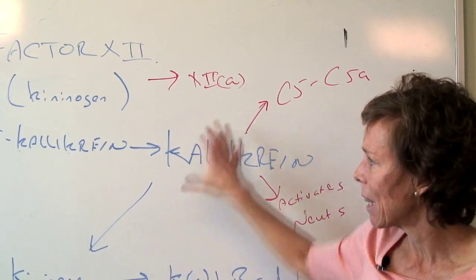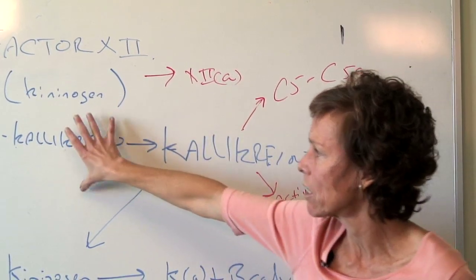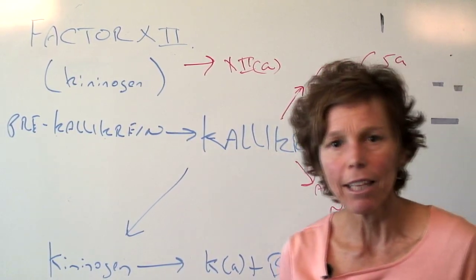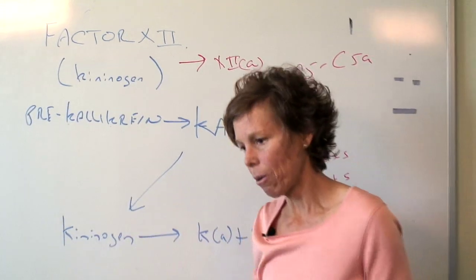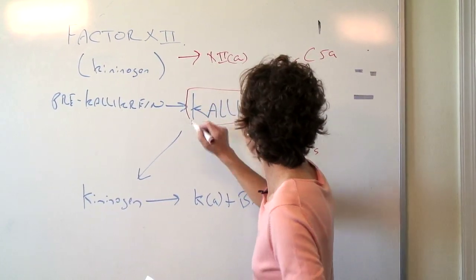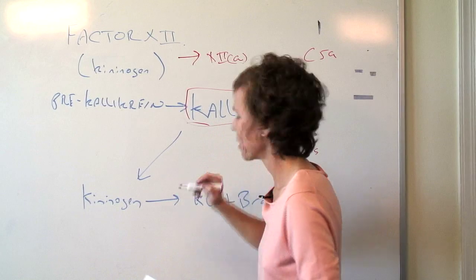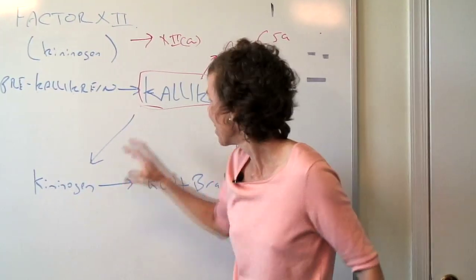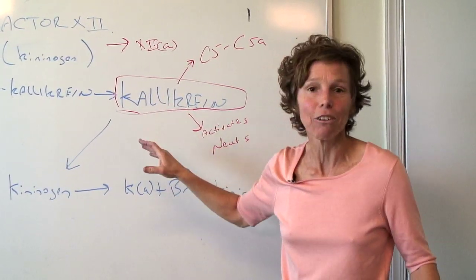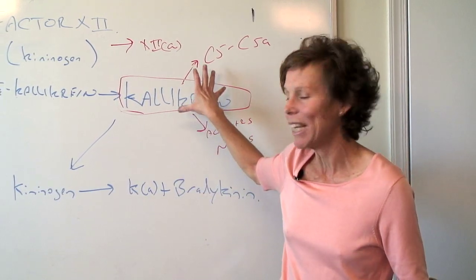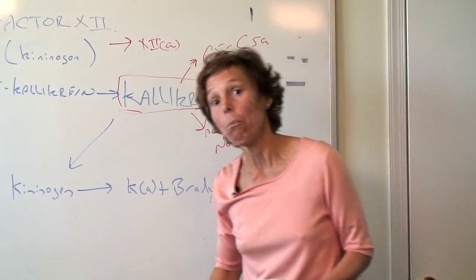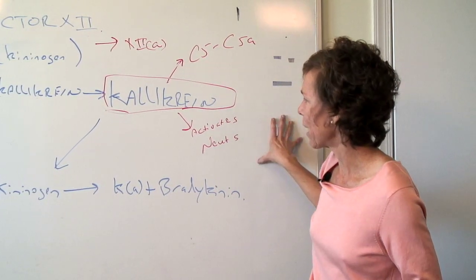Factor 12a then splits pre-kallikrein into kallikrein. The point is that kallikrein then goes a little crazy and is creating a lot of different, very vasoactive components in terms of the body.